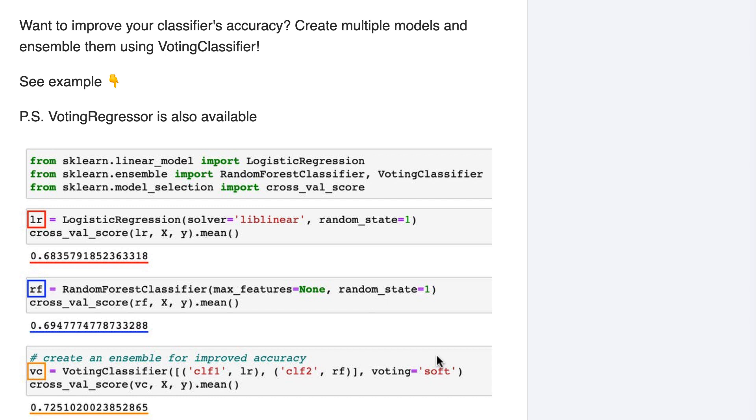Two final notes before we wrap up. First, if you have a regression problem, you would use the voting regressor class instead of voting classifier. Voting regressor simply averages the predictions made by the individual regressors, and so you won't need to choose a voting strategy.